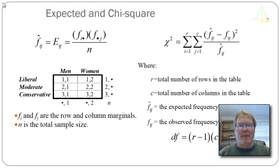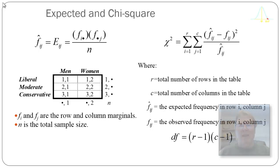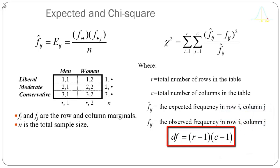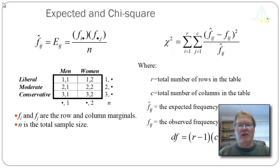In this example I have six cells, so I'll sum six different numbers. I then use the degrees of freedom to go to a chi-square table and look up my chi-square critical value, then compare chi-square calculated to chi-square critical. If chi-square calculated exceeds chi-square critical, I reject the null hypothesis.